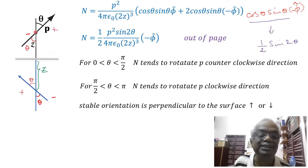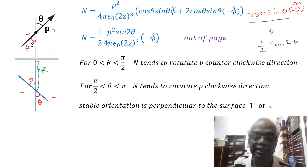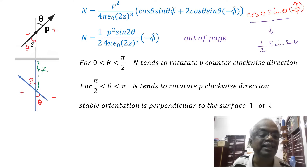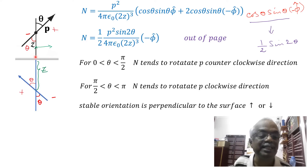So theta equal to zero in this context means this angle is zero. If you tilt from 0 to pi/2 (90 degrees), the torque tends to rotate P in the counterclockwise direction.